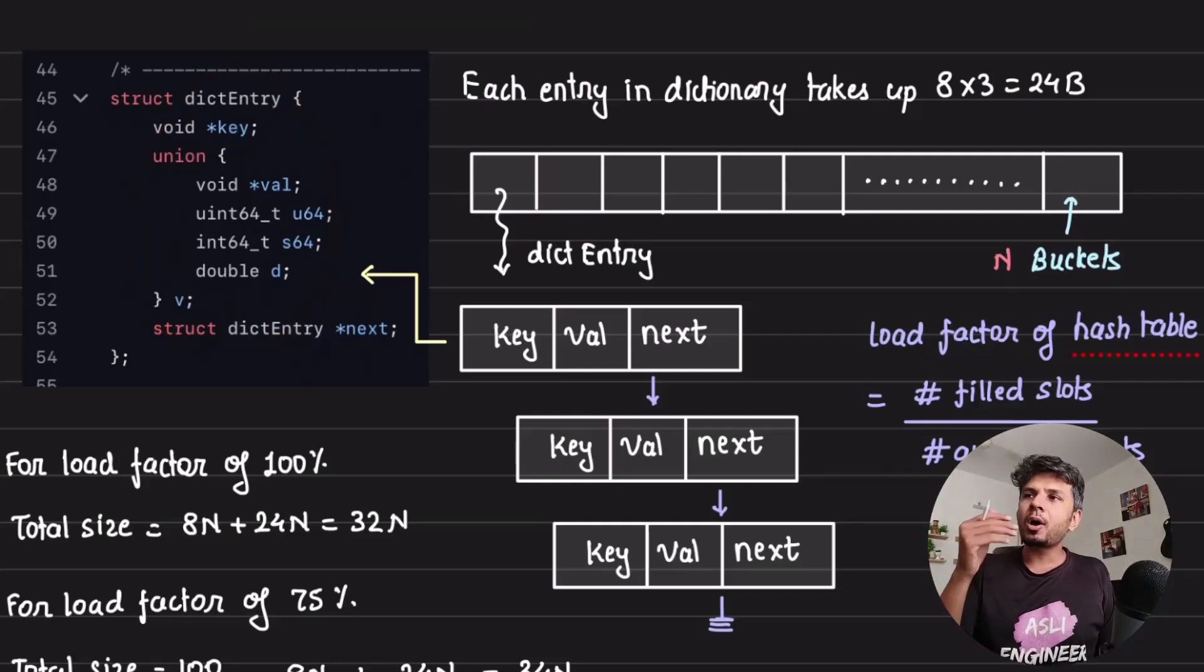How is Redis dictionary or hash table implemented? Hash table is nothing but an array of buckets. Each is a pointer to a linked list. Redis uses chaining as a way to do conflict resolution.